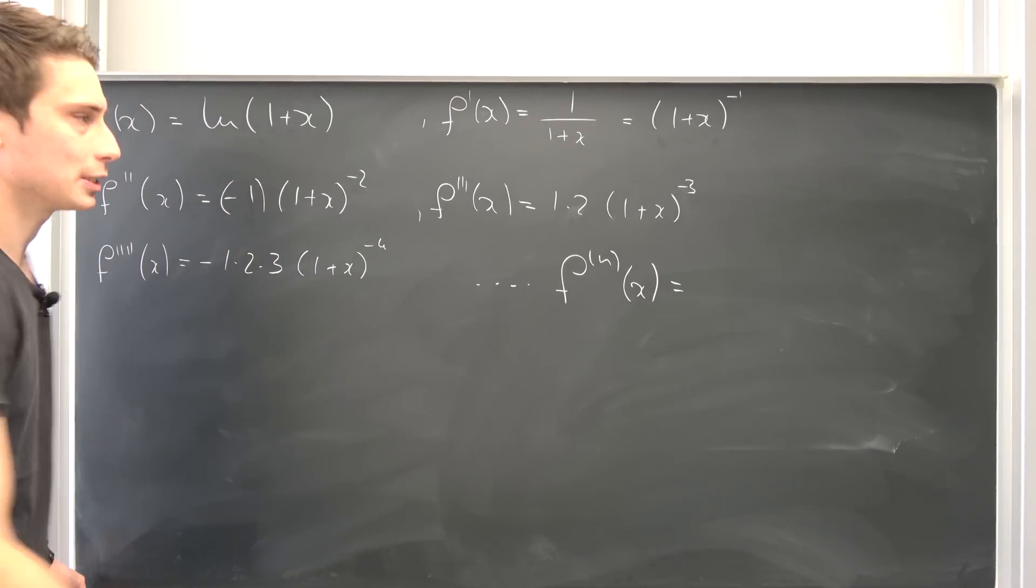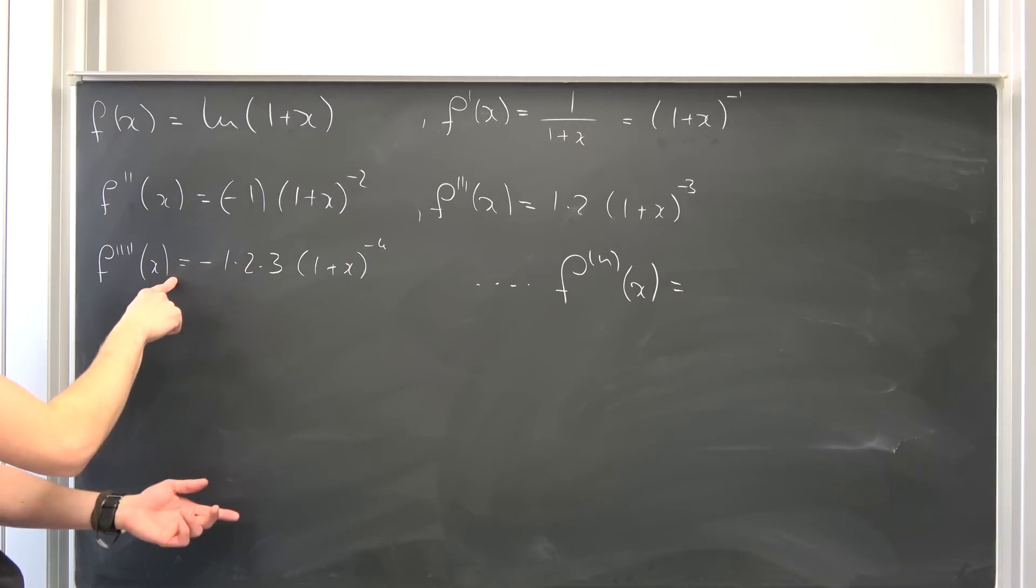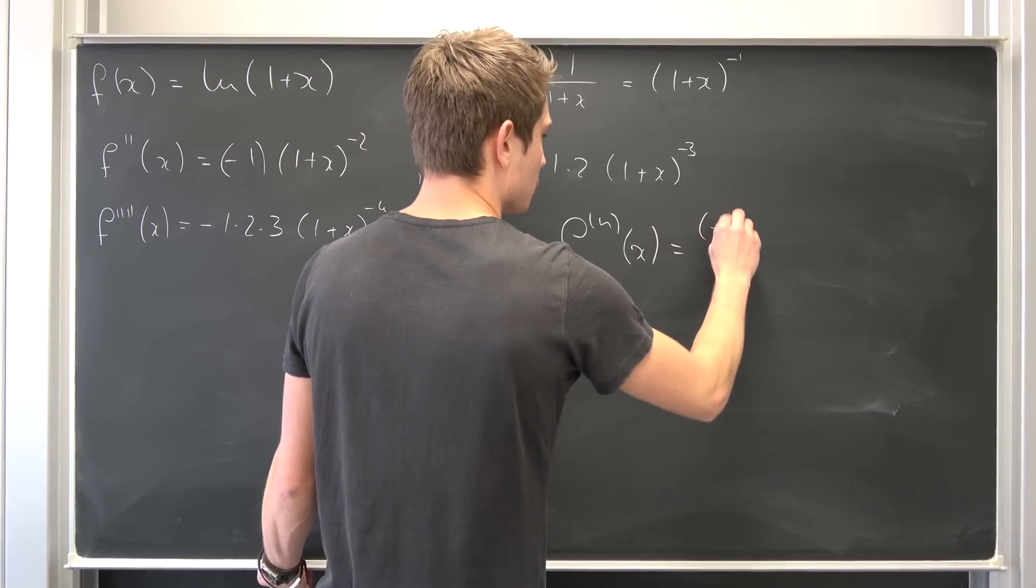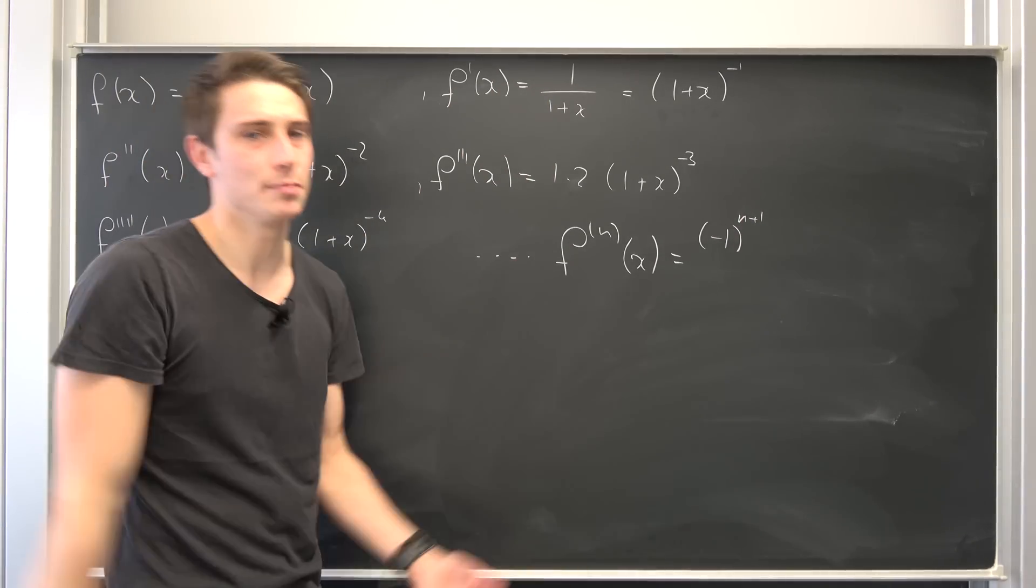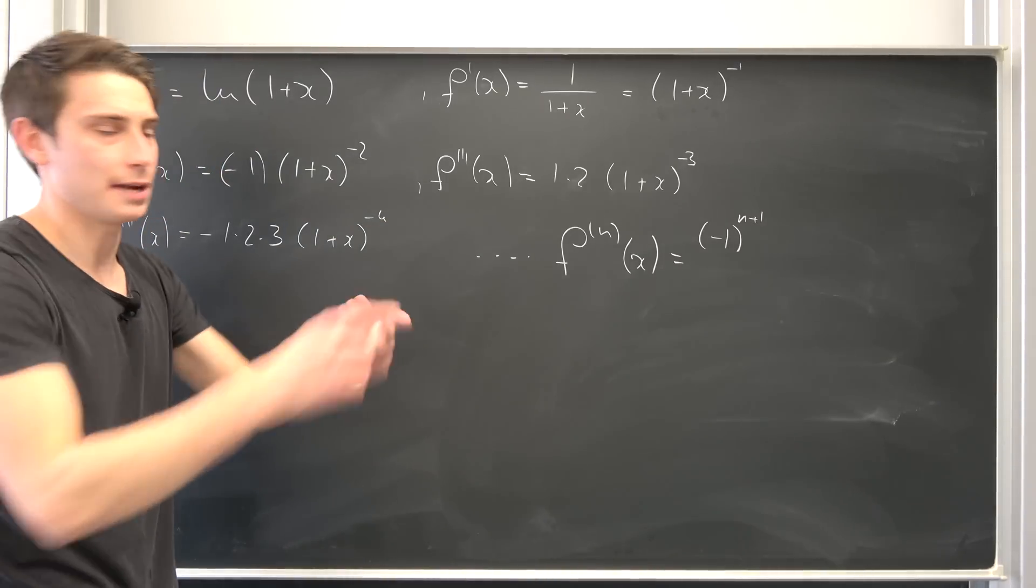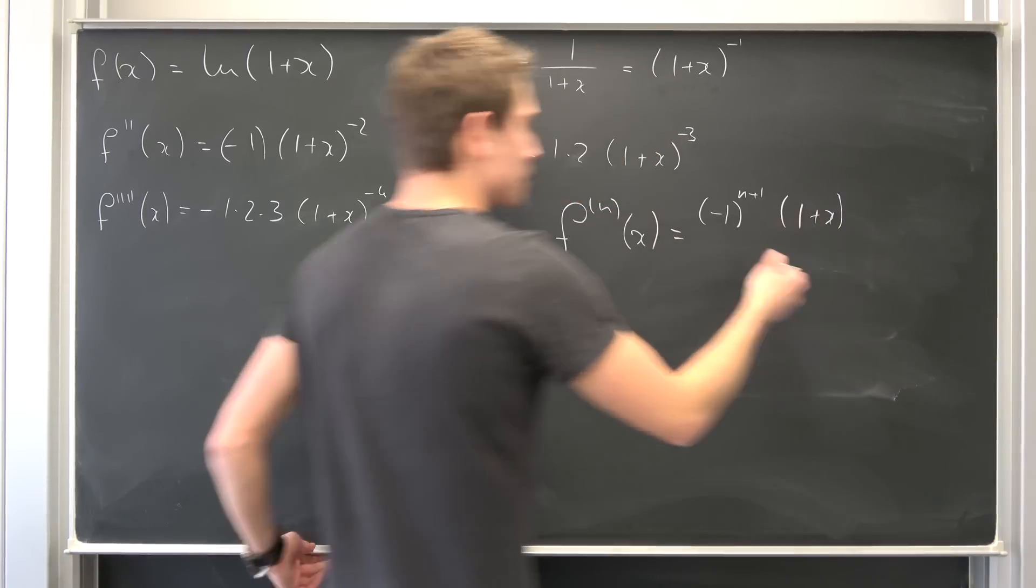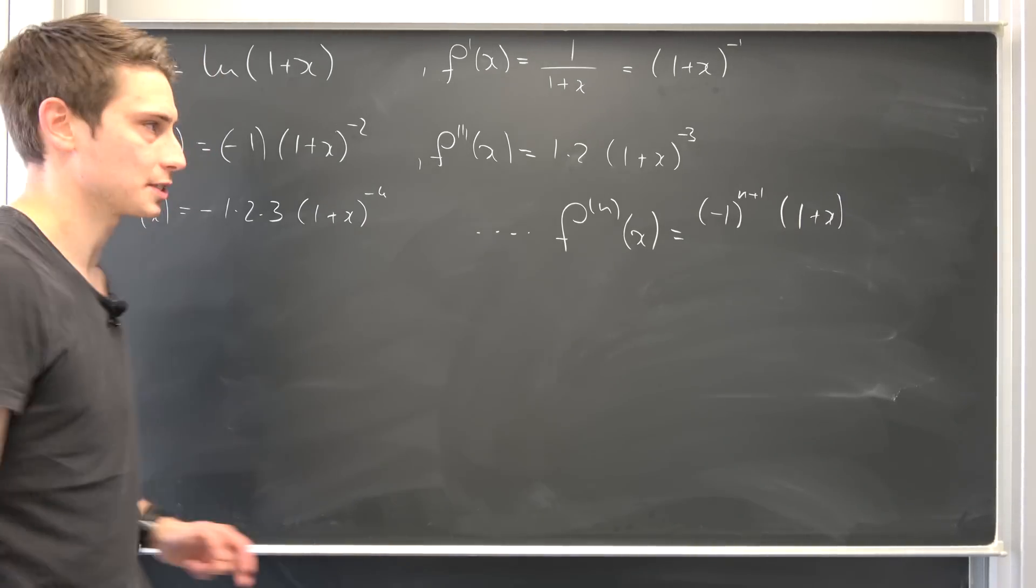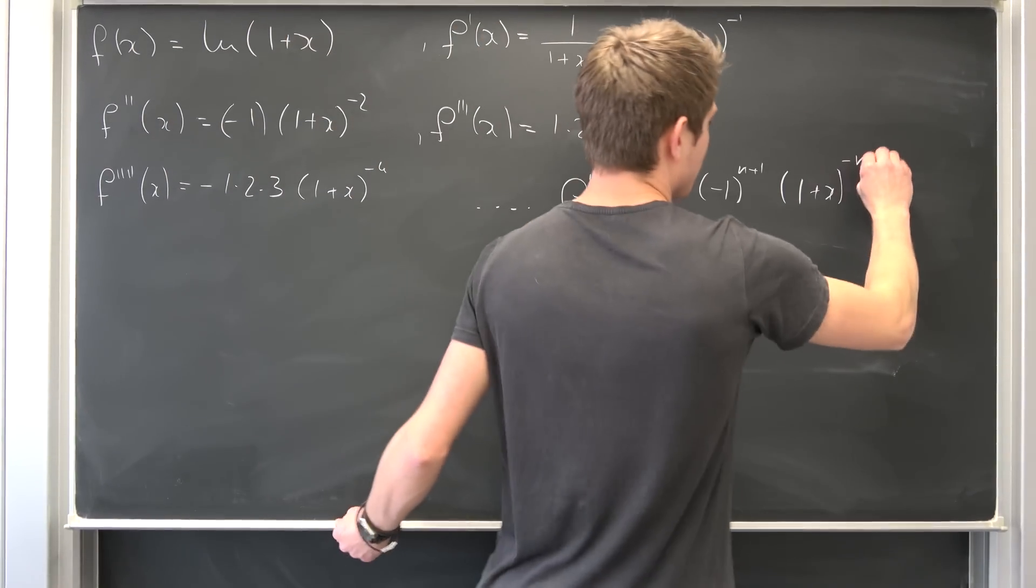But when exactly do we have our negative 1s? On the second derivative we have a negative 1, so on even derivatives, fourth derivative negative 1, we are going to have a negative 1. Meaning we have to have a factor of negative 1 to the n plus 1 or n minus 1 power. It really doesn't matter what you choose. Most people tend to use the n minus 1 power. Also we have this 1 plus x term. On the second derivative we have negative 2, on the third derivative we have negative 3, so that's quite obvious, to the negative n power.